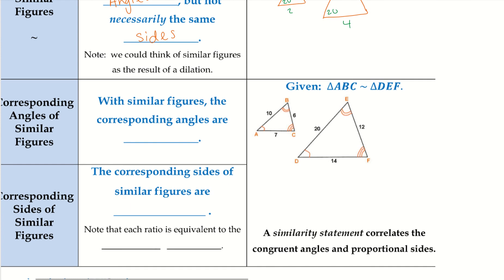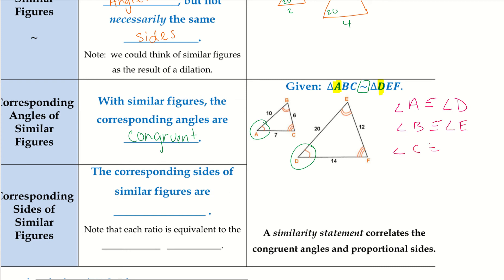Corresponding angles of similar figures: the corresponding angles are congruent. Remember the little curves on each angle — that just shows that those are congruent. So we have our similarity statement: triangle ABC is similar to triangle DEF. A and D are similar — they only have the one curve and they're both at the front. So angle A and angle D are congruent. And then B and E, and C and F. We can write out those statements: angle A is congruent to angle D, angle B is congruent to angle E, and angle C is congruent to angle F.